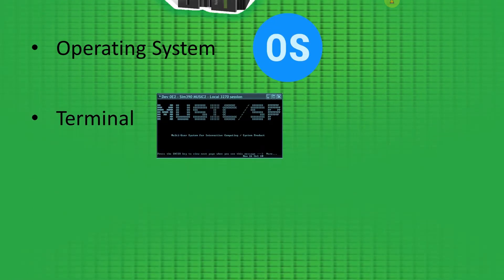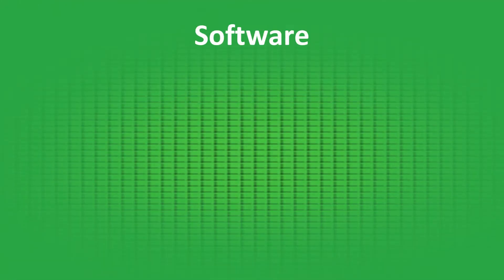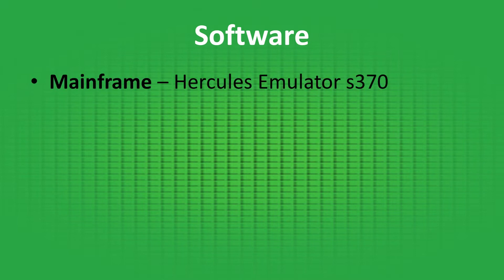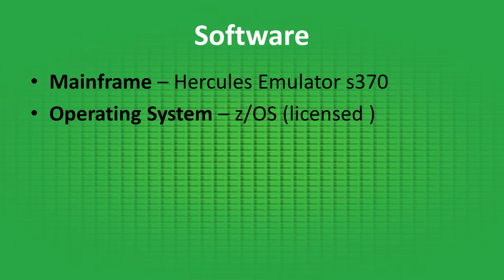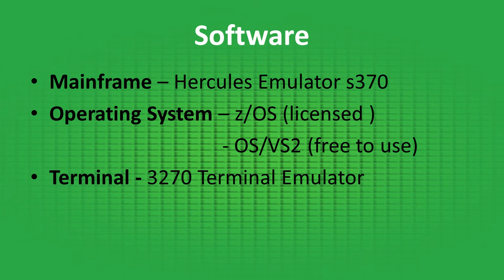The mainframe emulator we are going to install is Hercules S370. There are other mainframes available but they are licensed and you will have to pay. We are going with free software. For the operating system, we could install z/OS — the latest mainframe OS — but it is licensed and you would have to pay IBM. So we will go with OSVS2, which is totally free. For the terminal, we will use the 3270 terminal emulator, also totally free.